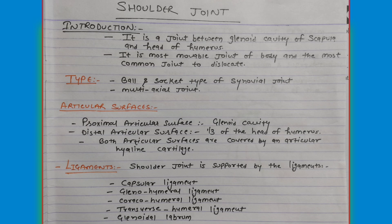Today we are going to discuss competency number 10.12, which is the shoulder joint. If there is a long question about the shoulder joint, we will discuss how to attempt it. The shoulder joint is the most movable joint of the body and the most commonly dislocated joint.